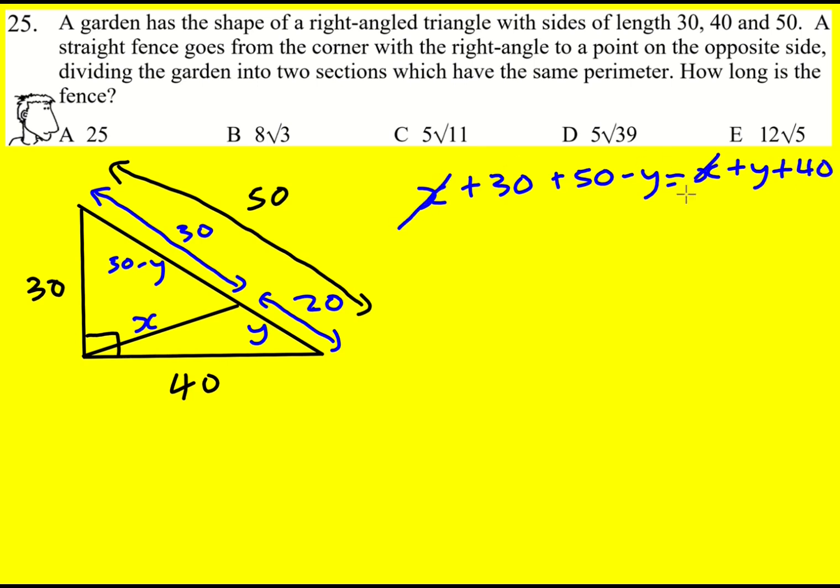The x's cancel out. We get 80 minus y equals y plus 40. So 2y is 40, so y is 20.